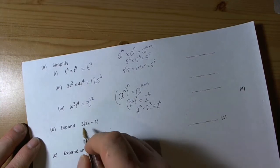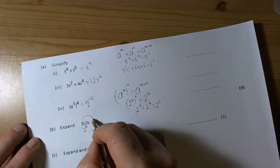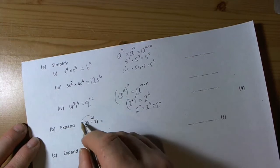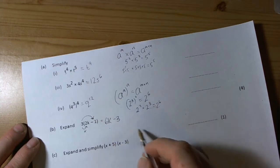Expanding brackets means multiply and remove the bracket. So we've got two things going on here. We've got 3 times 2k and we've got 3 times minus 1, negative 1. So 3 times 2k is 6k. 3 times negative 1 is negative 3, so minus 3.